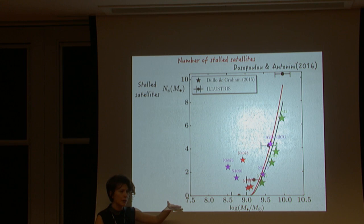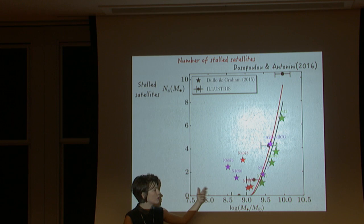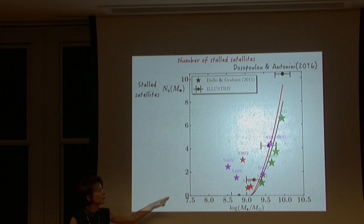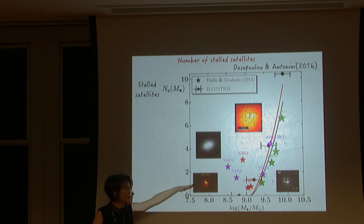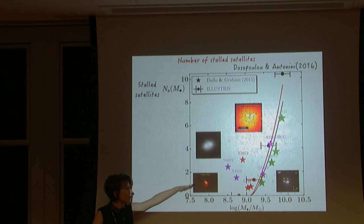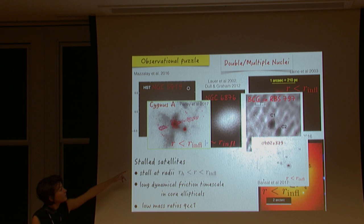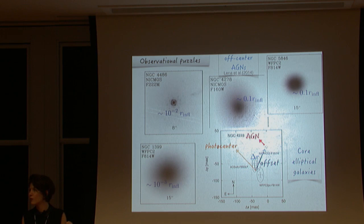Regardless of which prescription is used, the result is robust: in these massive galaxies we expect a few stalled satellites. The purple data points represent the observed double or multiple nuclei systems I showed at the beginning, and this model predicts the presence of these nuclei at the central parts of these galaxies — consistent with the observations. These stalled satellites are a result of stalling in the low-density cores of these galaxies.